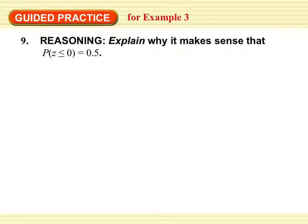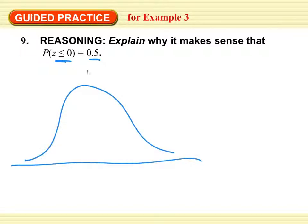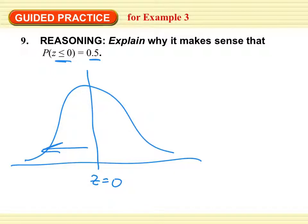Explain why it makes sense that the probability that the z-score is less than or equal to 0 is 0.5. Well, the standard normal distribution is symmetric, so this side would be half — 50%, or 0.5 — and this side would also be half, 50%, or 0.5.